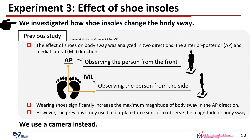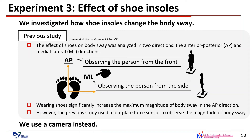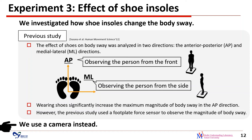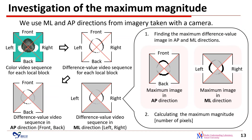We investigated how shoe insoles change the body sway. In a previous study, the effect of shoes on body sway was analyzed in two directions: AP and ML directions. In the AP direction, we observed the person from the front. Wearing shoes significantly increased the maximum magnitude of body sway in the AP direction. However, the previous study used a foot-plate force sensor to observe the magnitude of body sway, whereas we used a camera instead.